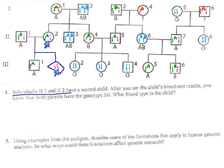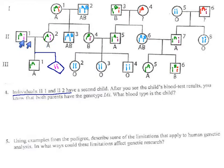If their blood type was A, that wouldn't tell us much of anything. We'd say the A could have come from either parent, and that doesn't give us any new information. We already knew the A part. If we gained the new information that they both had little i's, the easiest way to explain that is that they had a type O child. So that person's blood type is O — to finish off number four.